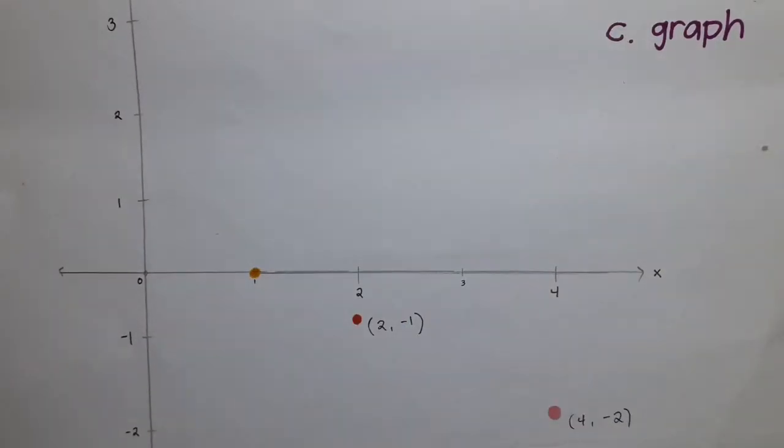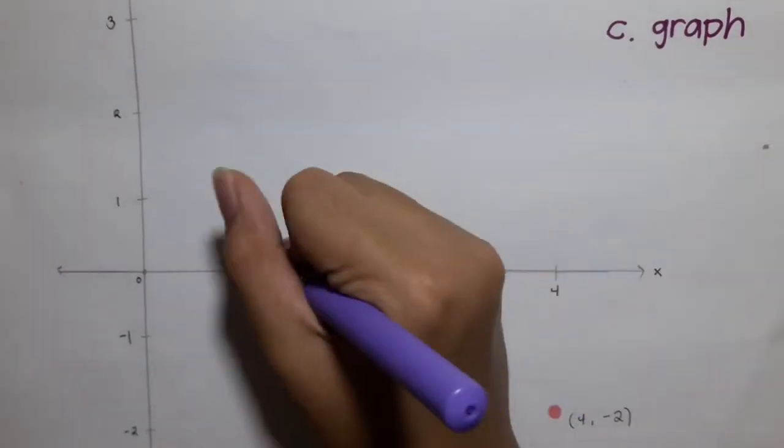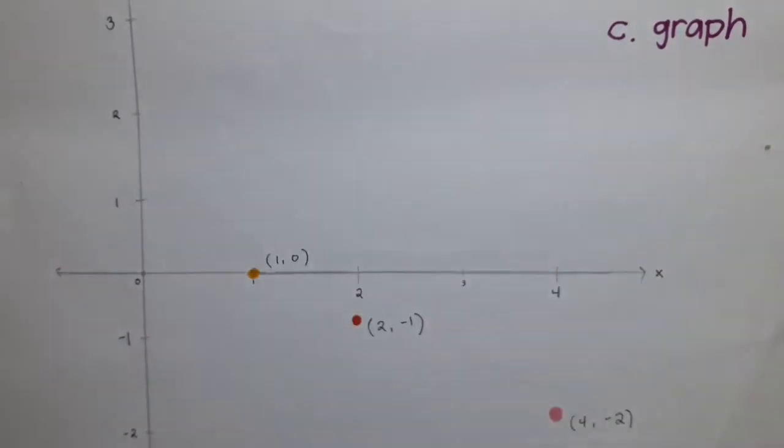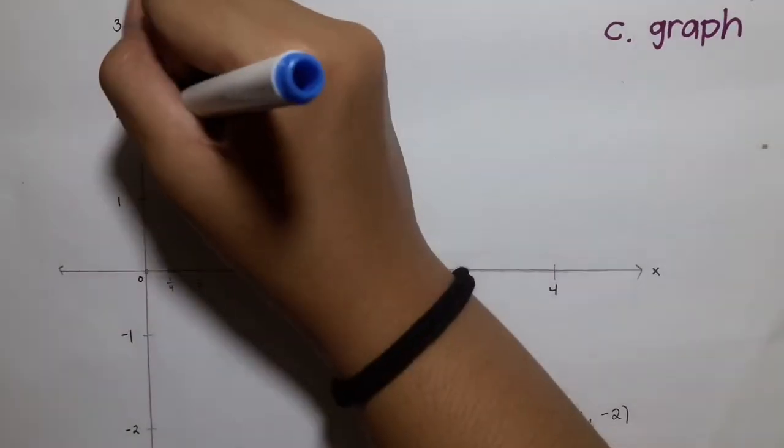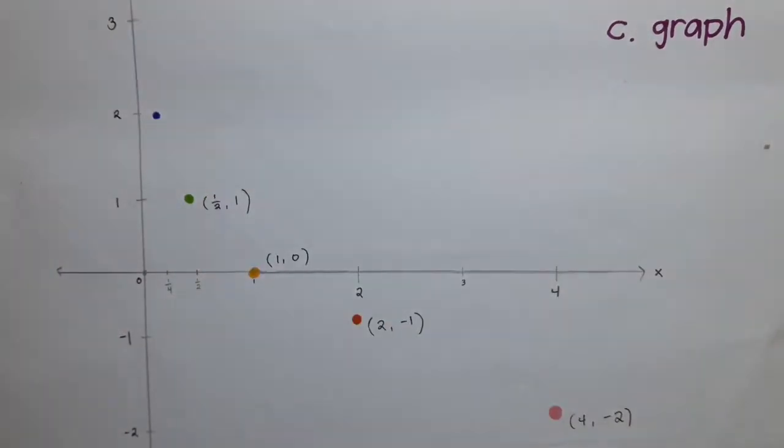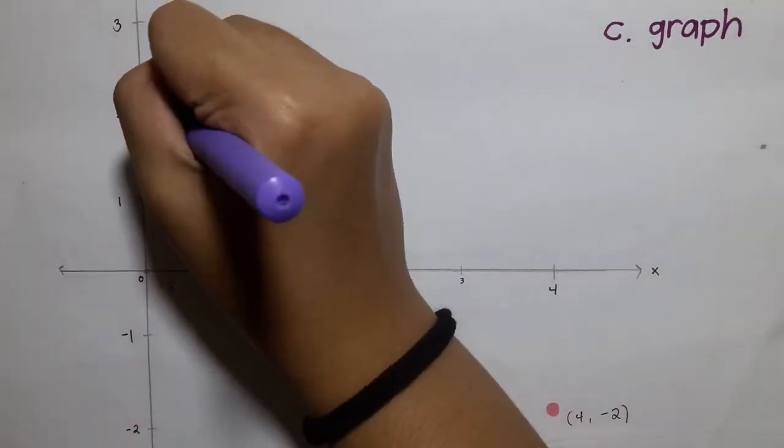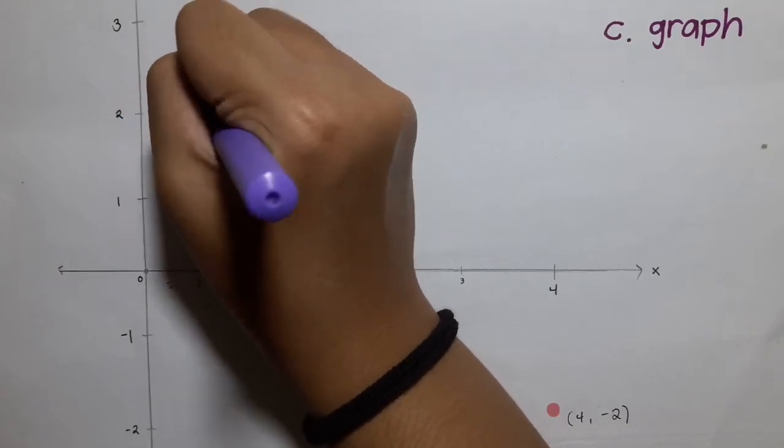Finally, we're at the last part of our process. The graphing. How to graph? Simply plot the x and y values given at the table of values presented previously. And then, connect it with a smooth curve.